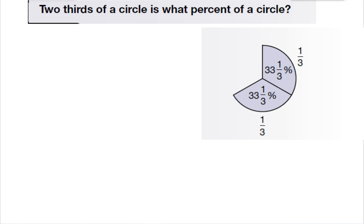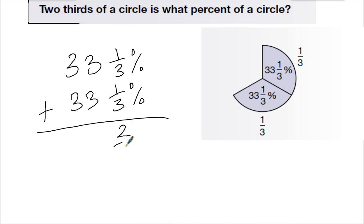This one asks, two thirds of a circle is what percent of a circle? So here I have my two third pieces, which I also know are 33 and 1 third percent. And to find out what percent this is going to be, I'm going to add 33 and 1 third percent, plus 33 and 1 third percent. So 1 third plus 1 third is 2 thirds. 3 plus 3 is 6. 3 plus 3 is 6. So the answer is 66 and 2 thirds percent.